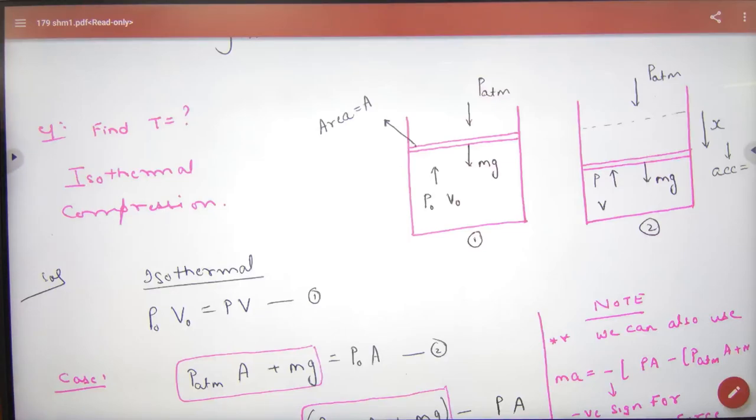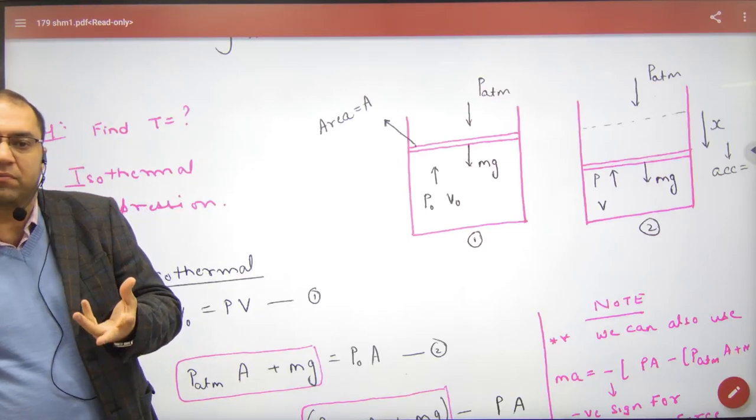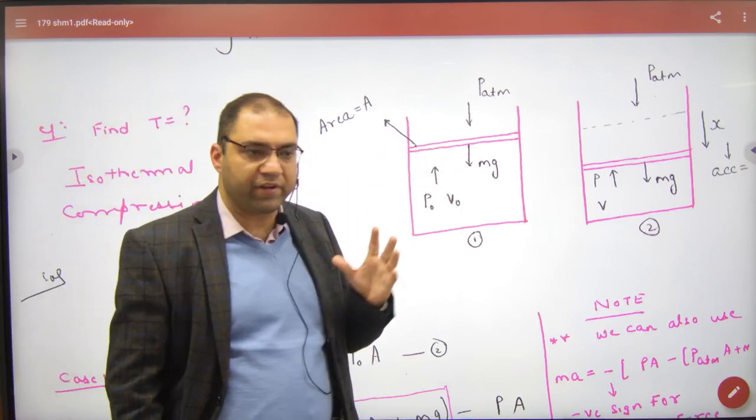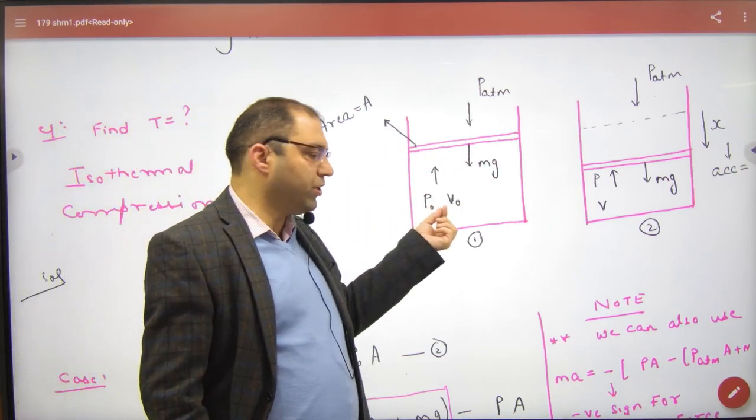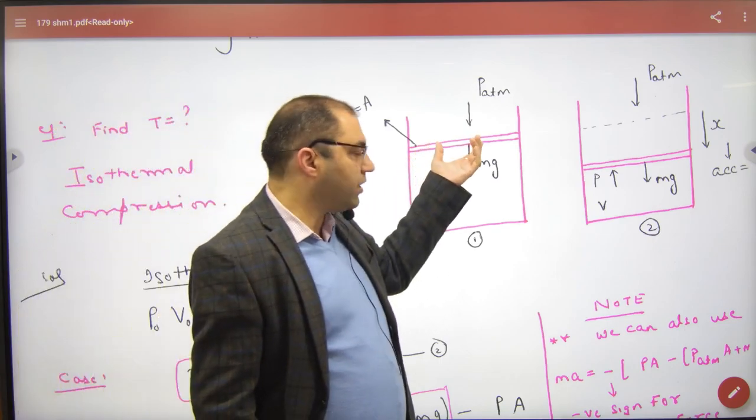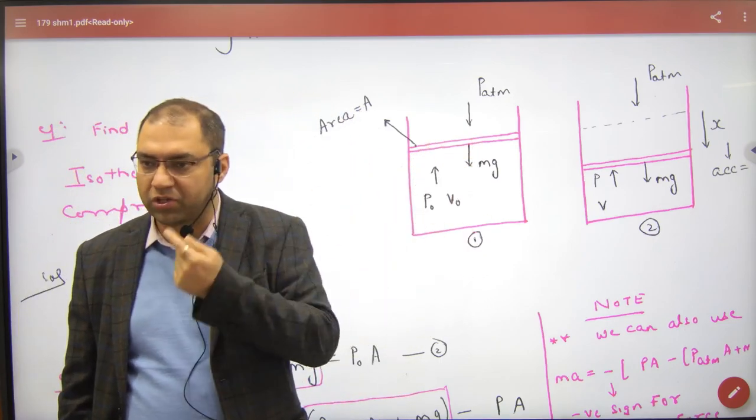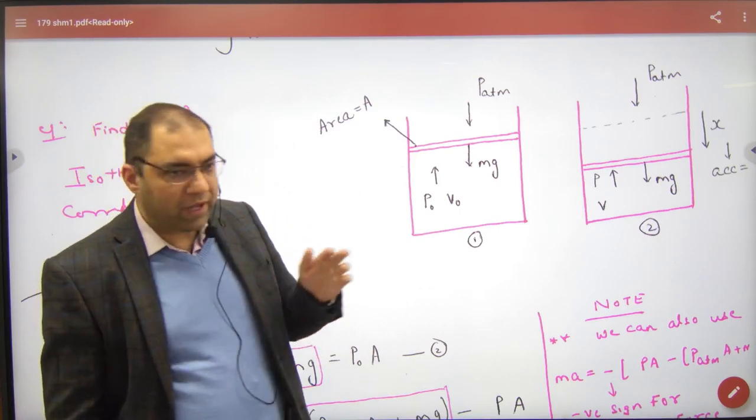What is given in this question? You have a piston and a cylinder given. It has gas. Its initial pressure is P-naught and volume is V-naught. The piston above it has weight Mg and area of cross-section is A.